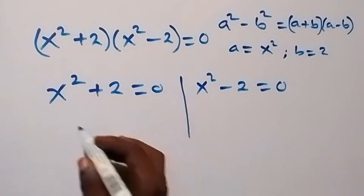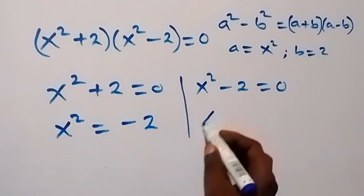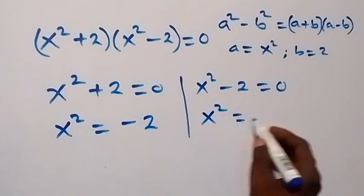we can solve and take 2 here. So here we have x squared minus 2. Then here x squared equals to 2.